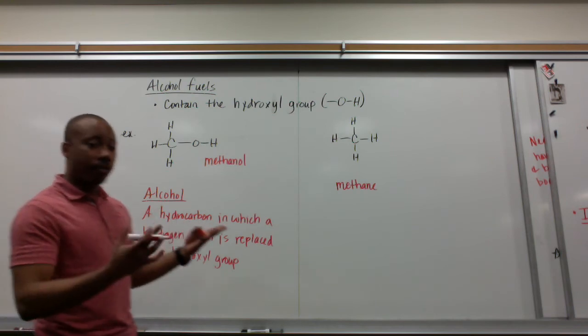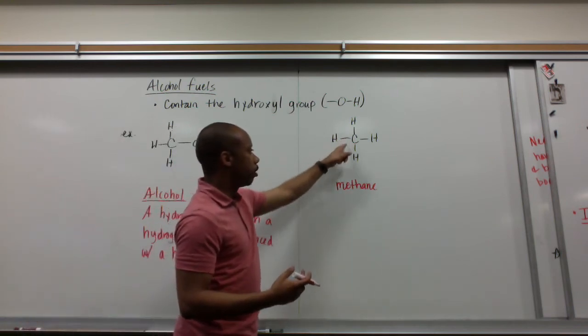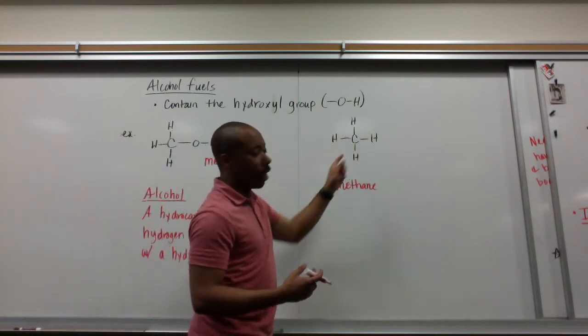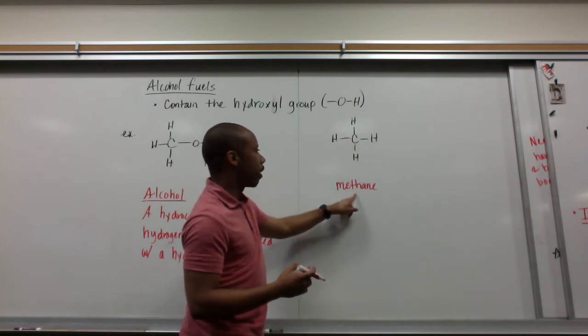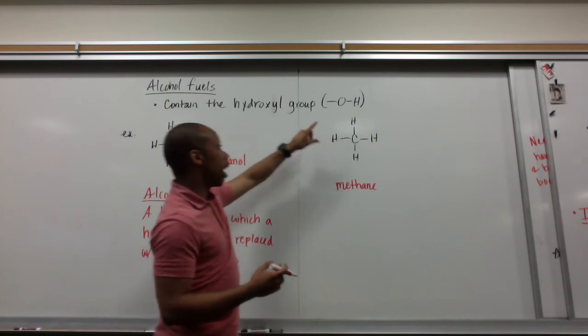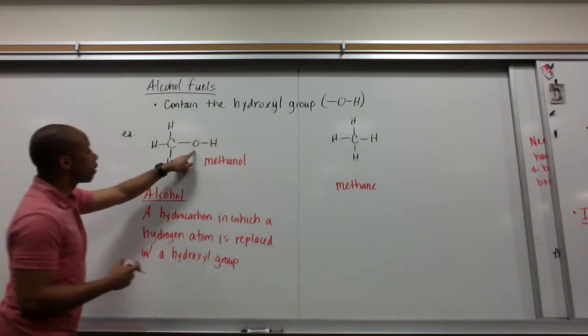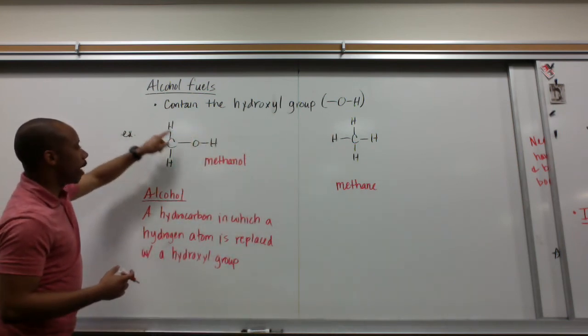An alcohol is a hydrocarbon in which a hydrogen atom is replaced with a hydroxyl group. An example, here's a hydrocarbon, methane, CH4. If I replace one of these hydrogens with a hydroxyl group, it is no longer methane, but it is methanol. Usually, we just add the O-L to the ending of our word, taking off that last E, and that would be a conversion from methane to methanol.